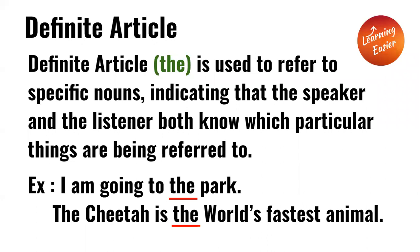Definite article. The definite article, which is the word 'the,' is used to refer to specific nouns, indicating that the speaker and the listener both know which particular thing is being referred to. For example, 'I'm going to the park.' 'The cheetah is the world's fastest animal.' In both these sentences, the word 'the' is used to refer to specific nouns.